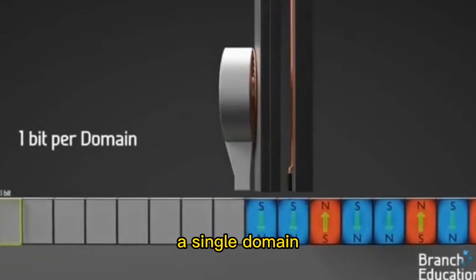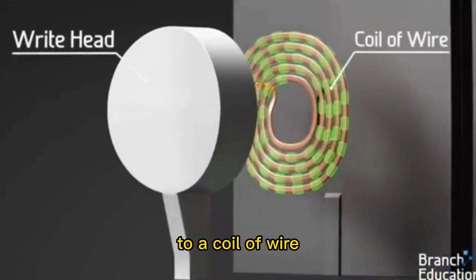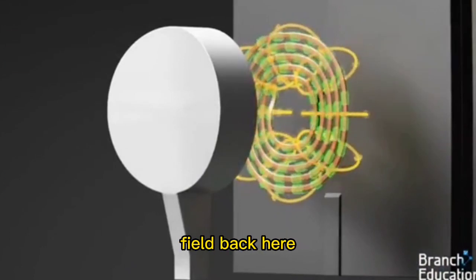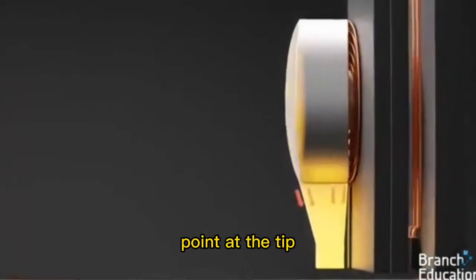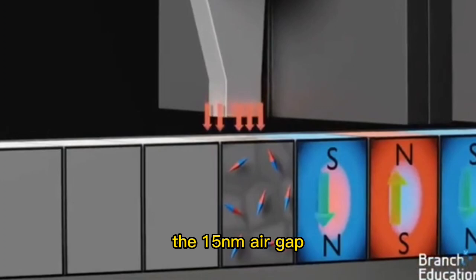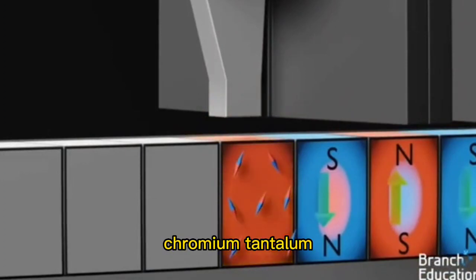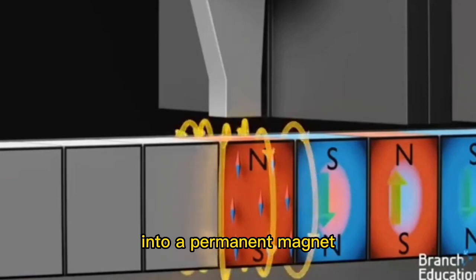In order to magnetize a single domain, which is equivalent to writing a single bit of data, a current is applied to a coil of wire at the back of the write head, thus creating a strong magnetic field back here. The magnetic field is channeled through the write head and focused into a small point at the tip, and then jumps across the 15 nanometer air gap and into the disk. When the focused magnetic field passes into a single domain of cobalt chromium tantalum, all these atoms are forced to align their tiny atomic magnetic fields with the applied magnetic field from the write head, thus turning the small domain or region into a permanent magnet.